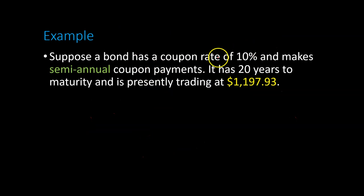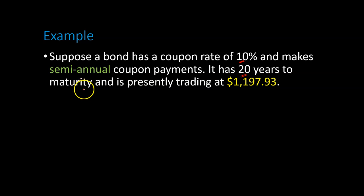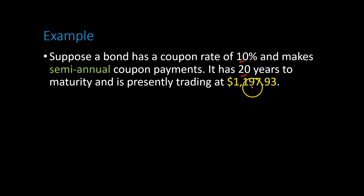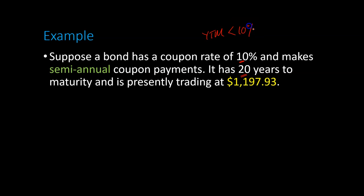Suppose there is a bond that pays a coupon rate of 10% and makes semi-annual coupon payments — so 5% every six months — and it has 20 years to maturity, so 40 six-month periods, and is presently trading at $1,197.93. Right off the bat, you can see that this bond is trading at a premium, and so this already tells you that the yield to maturity has to be less than the coupon rate of 10%.